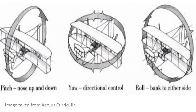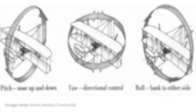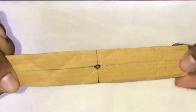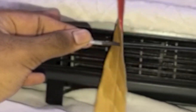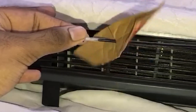The brothers found methods to control all three axes of movement using wires. The roll is the rotation about the x-axis, yaw is the rotation about the z-axis, and pitch is the rotation about the y-axis. Roll was controlled manually by twisting the wings using wires in opposite directions about the central axis, increasing the angle of attack of one wing while reducing the other's.